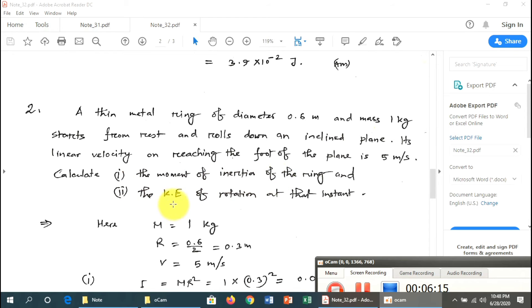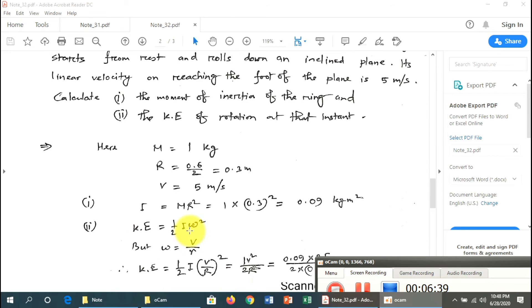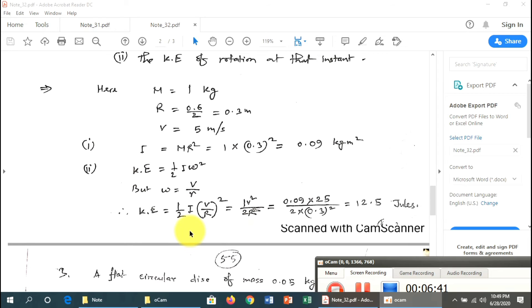Problem 3: A thin metal ring of diameter 0.6 meter and mass 1 kg starts from rest and rolls down an inclined plane. The moment of inertia for a ring is I = mr², which differs from a disc where I = mr²/2.